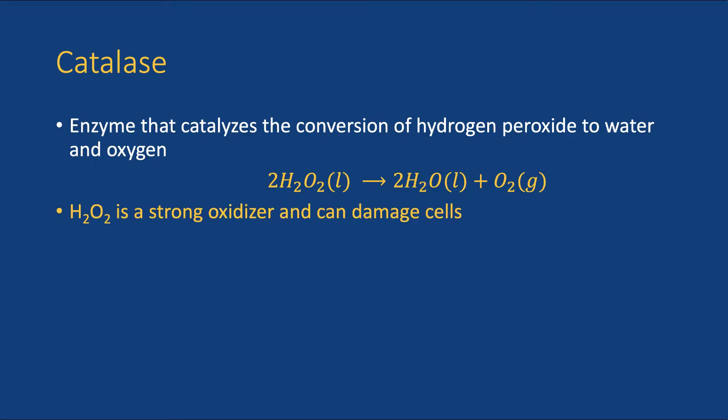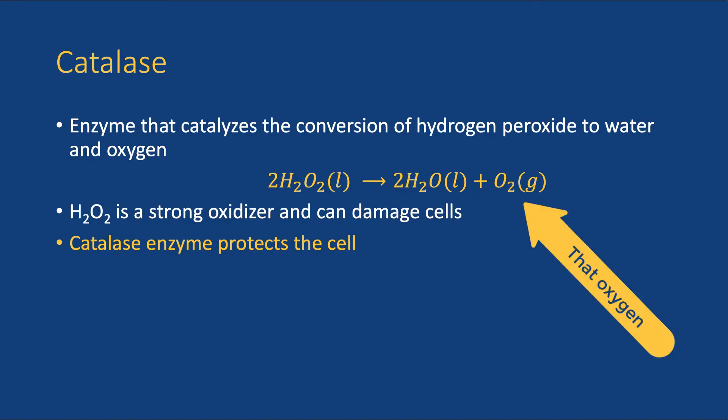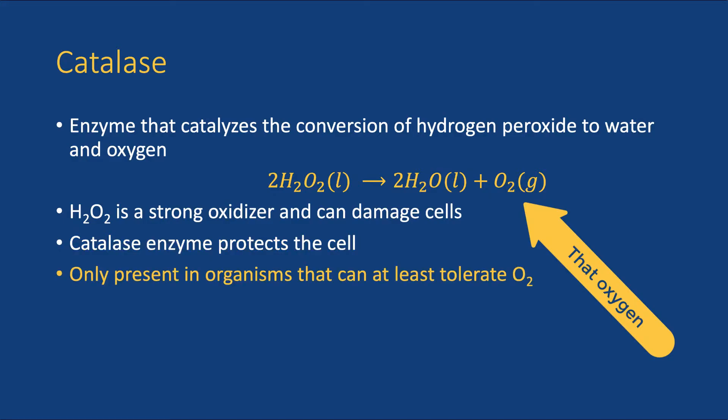Hydrogen peroxide is a strong oxidizer and can damage cells. Bacteria that have the catalase enzyme are protected against such damage by converting the hydrogen peroxide to oxygen. This also means that a bacterium can at least tolerate oxygen.